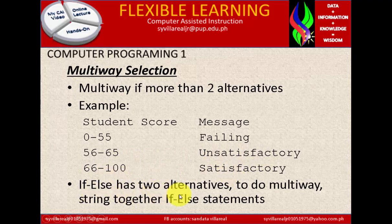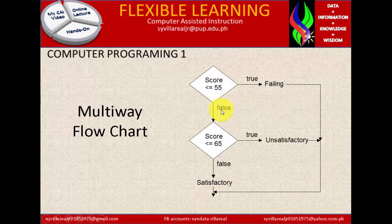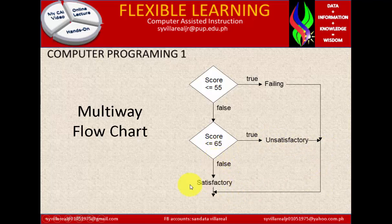If-else has two alternatives. To do a multi-way, you string together if-else statements. We have here the multi-way chart. Score less than or equal to 55 — if true, it is failing, then go to end. If false, then check score less than or equal to 65. If true, unsatisfactory and go to end. If false, it goes directly to satisfactory.